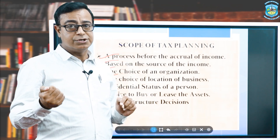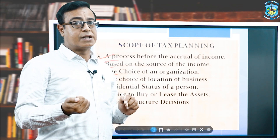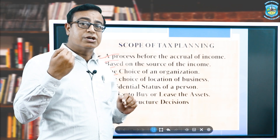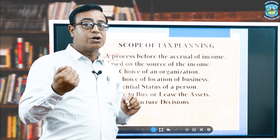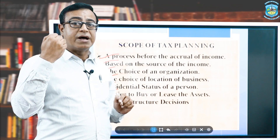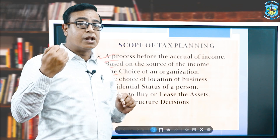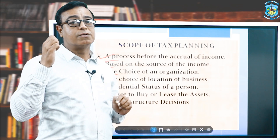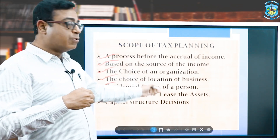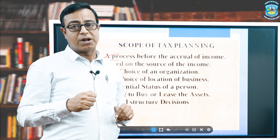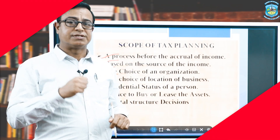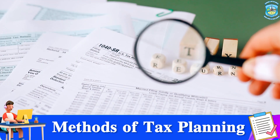For designing the capital structure of a company, we can also use tax planning concepts. The best capital structure gives the maximum return to shareholders. Using tax planning, we can decide the best ratio of debt and equity in the capital structure. These are the scope and subject matter of tax planning — all these areas are covered under the tax planning process.